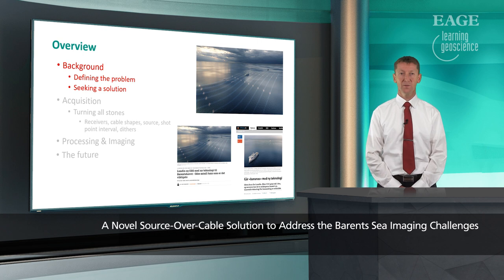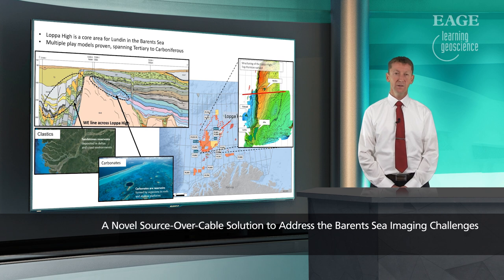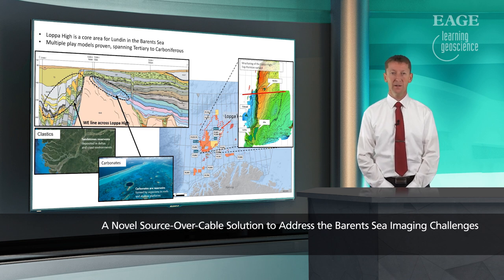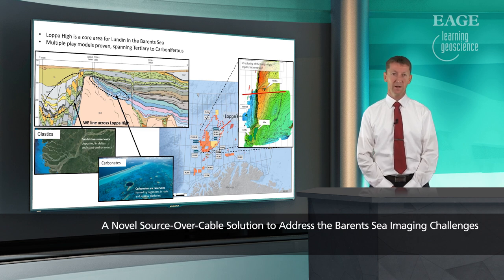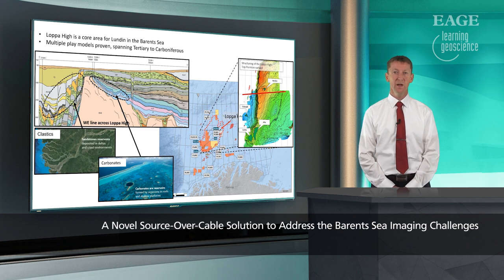In the Loppa High area, which is a core area for Lundin Norway, we discovered oil in 2013 and 2014, and we realized that in order to develop this area we needed better seismic imaging. There are multiple plays here from the Permian into the Tertiary to Carboniferous, all in carbonate areas on these platform highs.